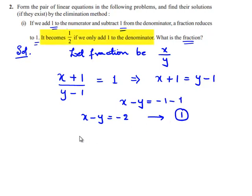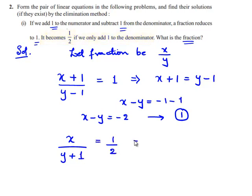By the second condition, it becomes 1 by 2 if we only add 1 to the denominator. So the numerator remains as x, and 1 is added to the denominator which becomes y plus 1. This is equal to 1 by 2. On cross multiplication, we get 2x is equal to y plus 1. On rearranging the terms, we get 2x minus y is equal to 1. Name this as equation number 2.